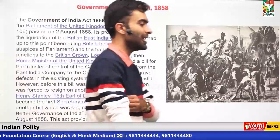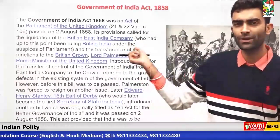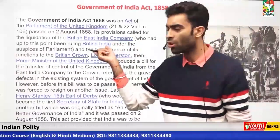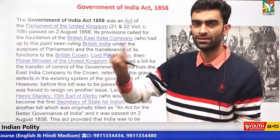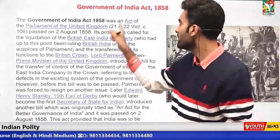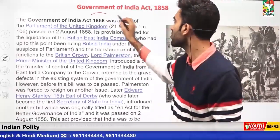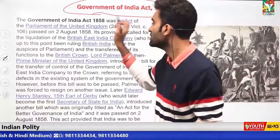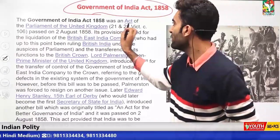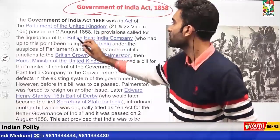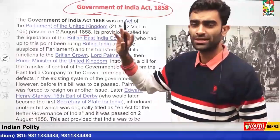Now we are looking at the Government of India Act 1858. There are many Government of India Acts, but this is not the most important one — the more important one is the Government of India Act 1935. The Government of India Act 1858 was an act of Parliament of the UK, passed on 2 August 1858. These are factual details you should keep with yourself.